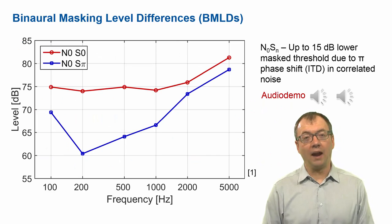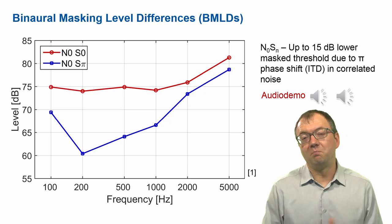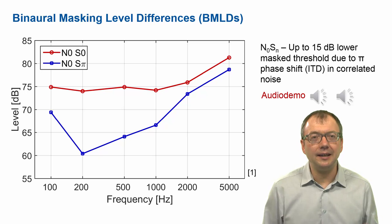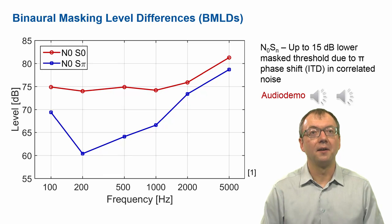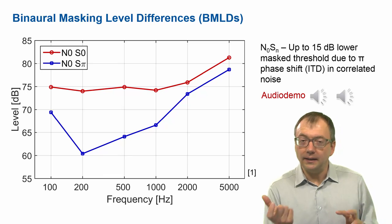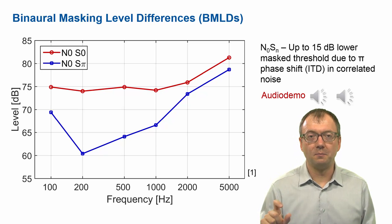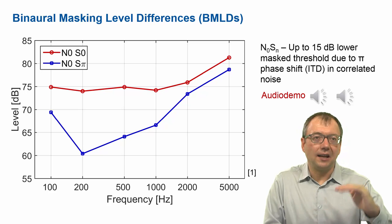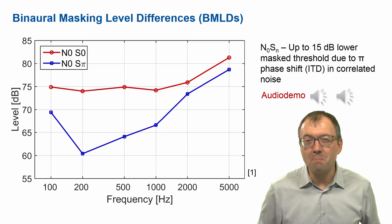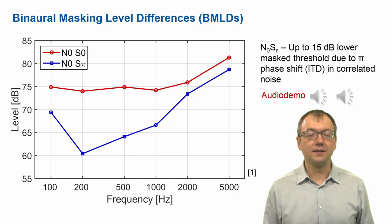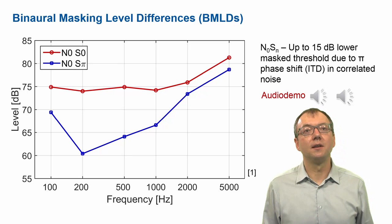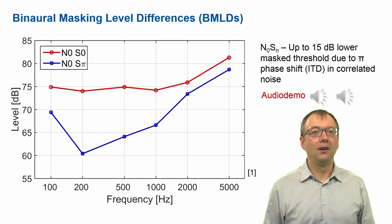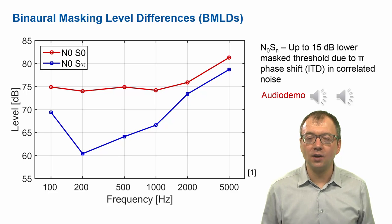The red curve in this graph shows the threshold in monaural conditions — here it's diotic listening, where you're maybe a little better but still similar to monaural. Now if you introduce the phase change in the signal but keep the noise diotic, still identical on both ears, you'll suddenly be able to hear the tone. There is a massive benefit from having that phase difference, which is equivalent to a time difference between the ears — we gain up to 15 decibels in threshold.